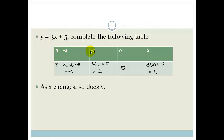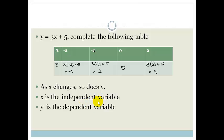So as x changes, so y changes. And x is what is called the independent variable. In other words, that's the one that we change, whereas y is the dependent variable.